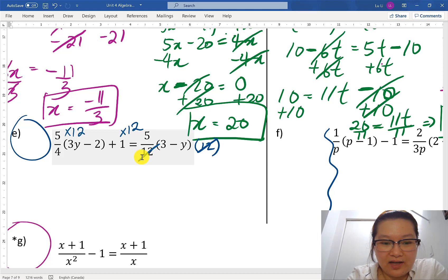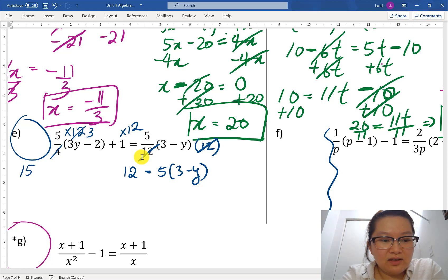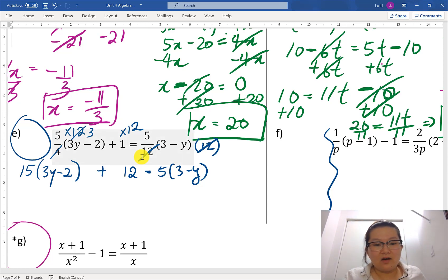So then I will be left with 5 and in brackets 3 minus y. What's next? 12 times 1, that's gonna be 12. I have 12 over here on the top times 5. Now 4 goes into 12 three times. So then I can cancel this 4, change this 12 to a 3 because I factored the 4 out. So I have 5 times 3 instead. So that's going to be 15. And then in brackets, 3y minus 2 in brackets. And then don't forget the plus 12.